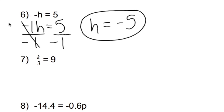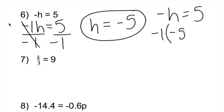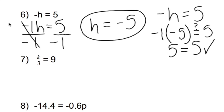Let's check to make sure this is correct. My original equation was negative h equals 5. Rewriting it, that negative is a negative 1 — parentheses show multiplication. Negative 1 times negative 5: is that equal to 5? Negative 1 times negative 5 is, in fact, positive 5. So 5 is equal to 5, and we are correct.